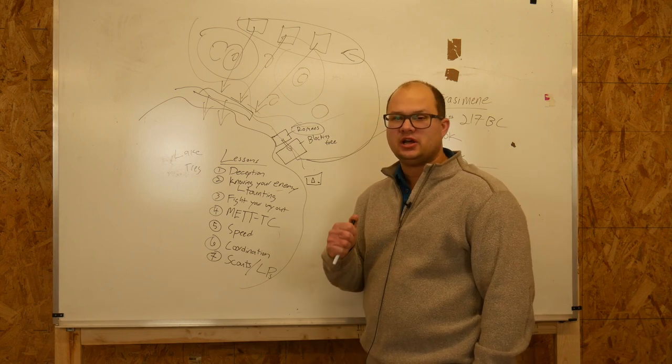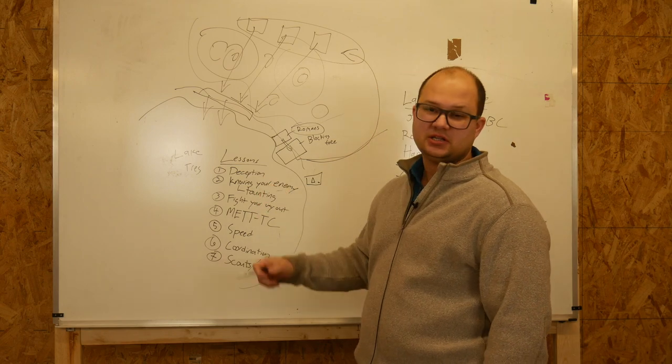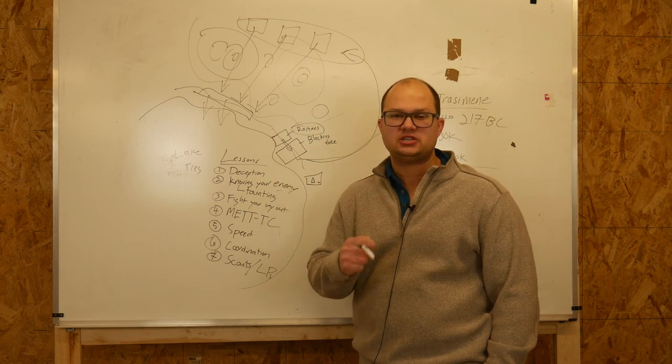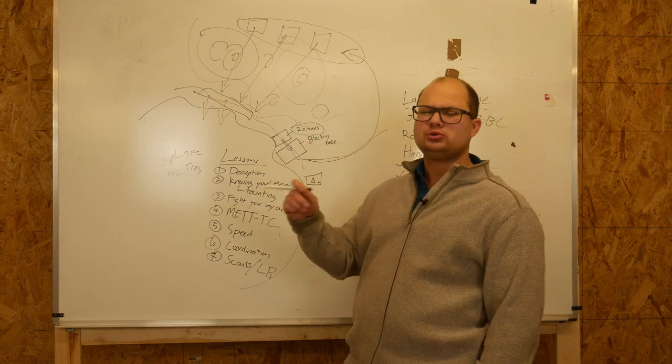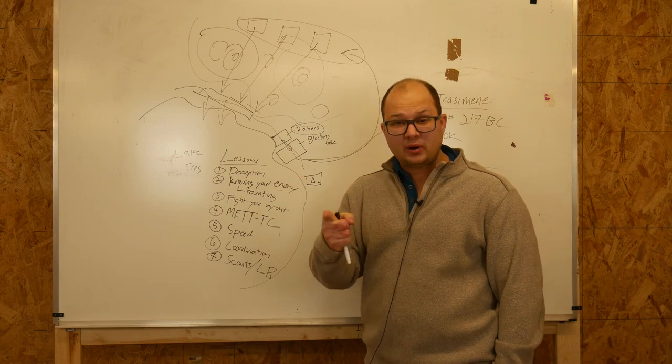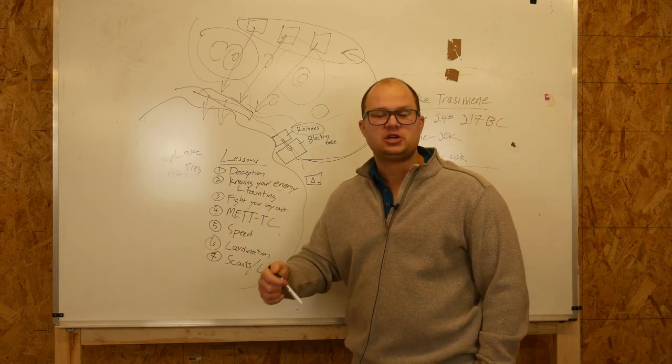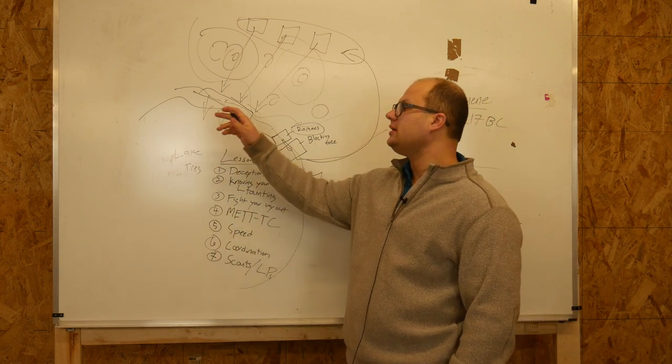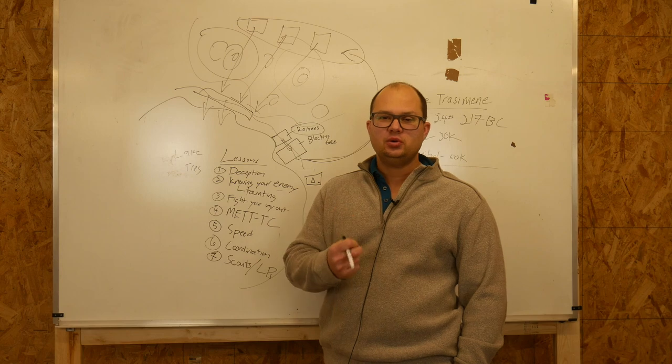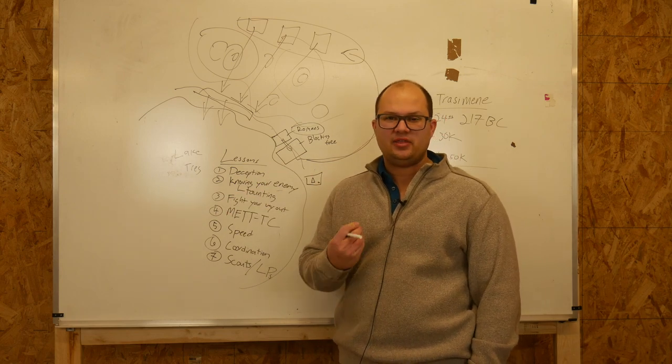Number two, know your enemy and learn how to taunt your enemy using that knowledge to your advantage. Sun Tzu says you have to know your enemy and know yourself and you'll never lose a battle. Hannibal knew his enemy. He knew the Roman general, whose name was Flavius if I remember correctly. He knew that he was aggressive and was going to look for a battle. So Hannibal taunted him. He taunted him by burning the countryside. Then he taunted him by running away. Then he deceived him with a camp. He knew his enemy was aggressive and wanted to look for a fight, and so he was able to lure them into the fight that he wanted.